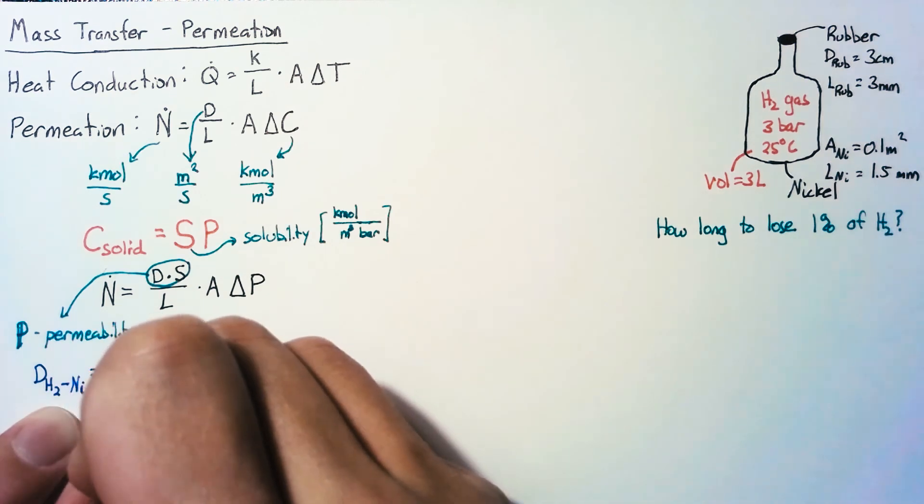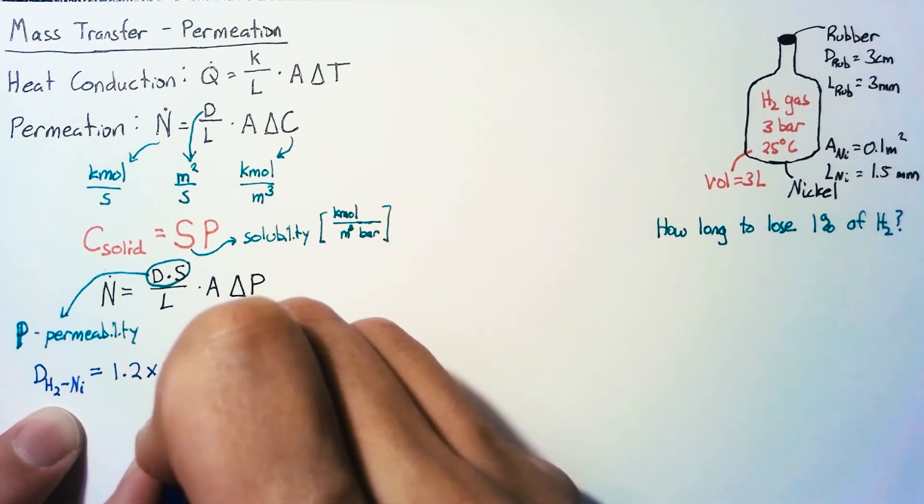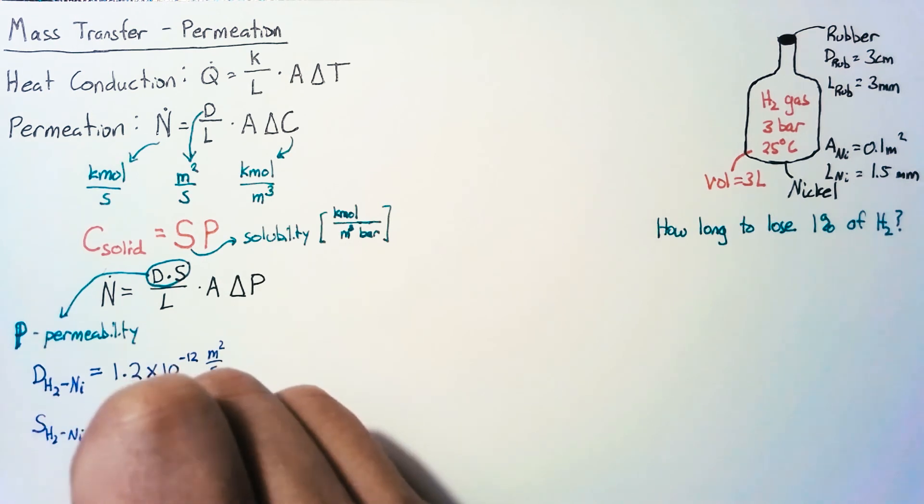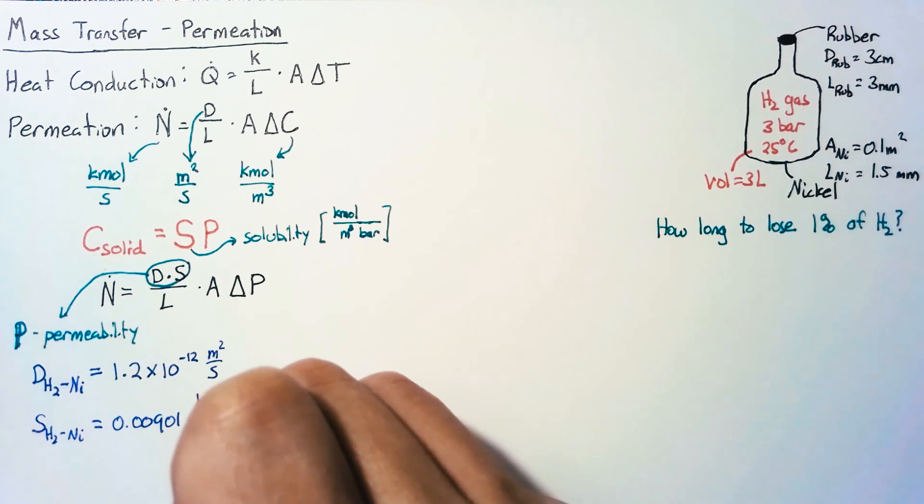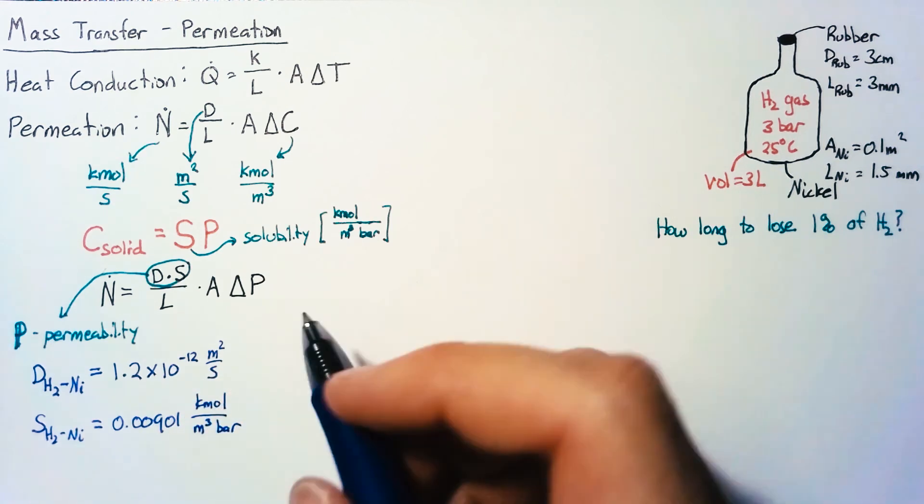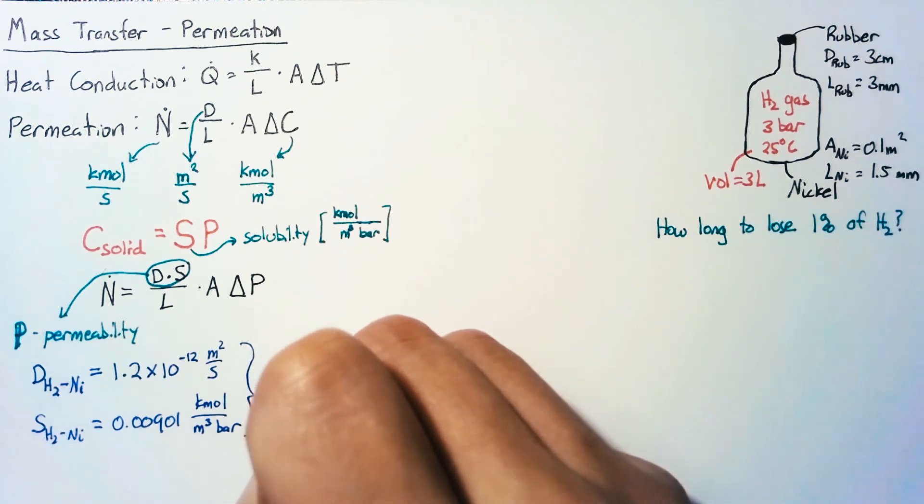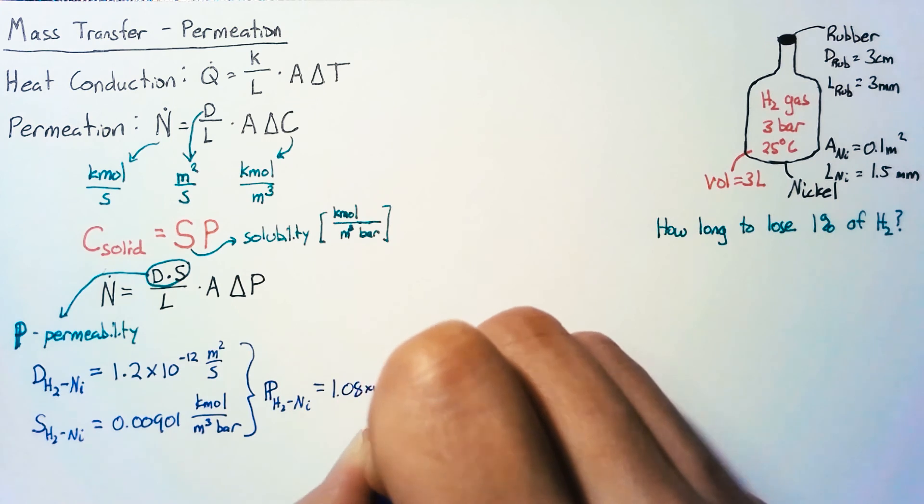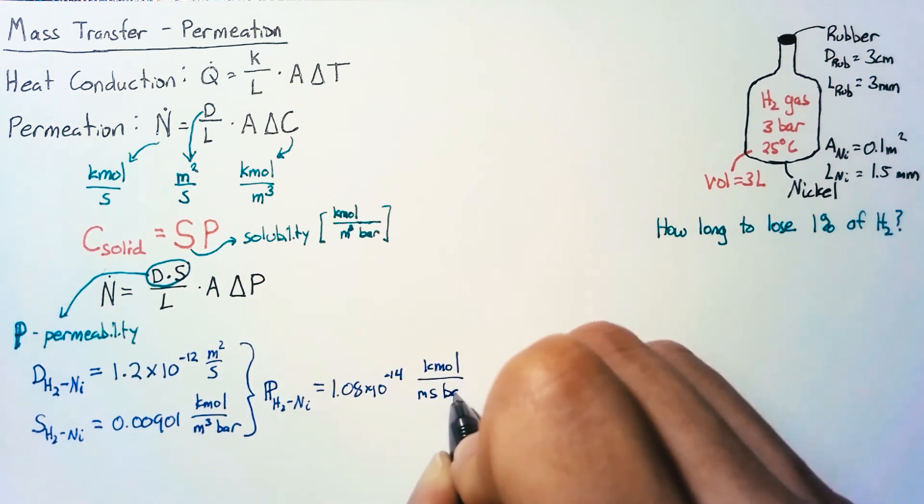For hydrogen through nickel, the diffusion constant is 1.2 × 10⁻¹² meters squared per second. The solubility of hydrogen in nickel is 0.00901 kilomoles per meter cubed bar. Taking these two values together, the permeability of hydrogen through nickel is 1.08 × 10⁻¹⁴ kilomoles per meter second bar.